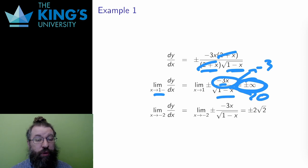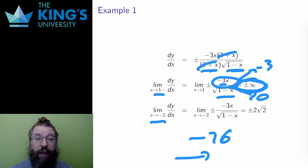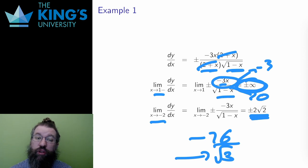I also take the limit as x approaches -2. Here, the numerator approaches 6, and the denominator approaches root 3. These are both finite and non-zero, so I just evaluate. 6 over root 3 is 2 root 3, so the limit is plus or minus 2 root 3. There are two slopes here, so this is a double-point node.